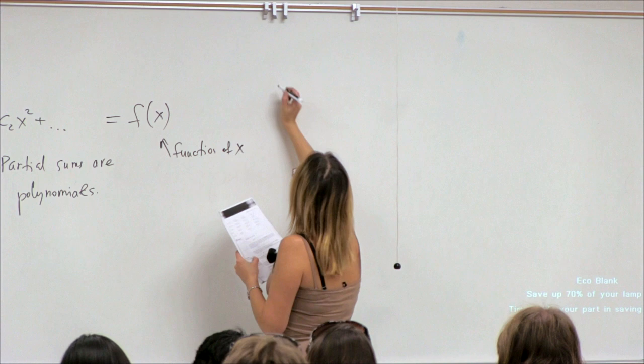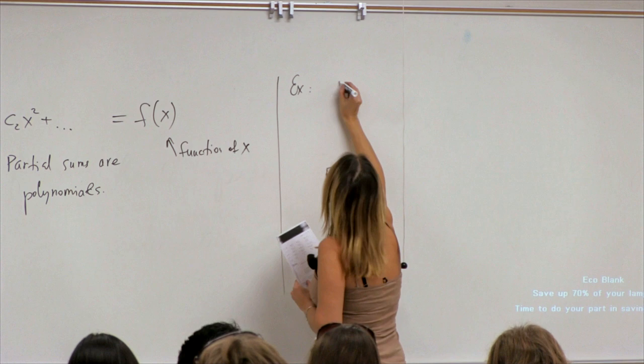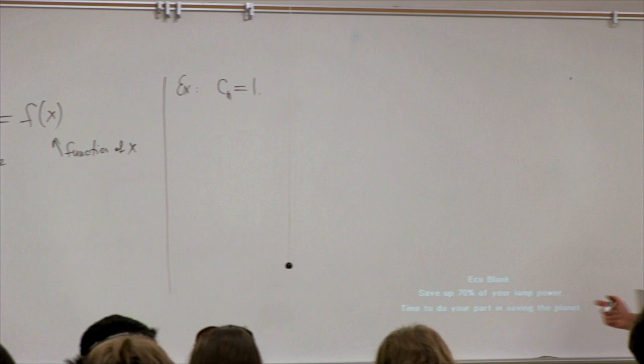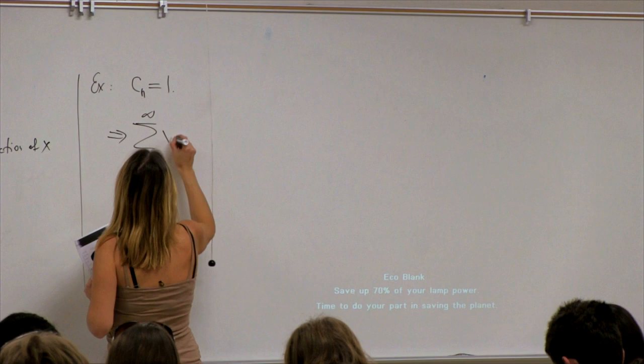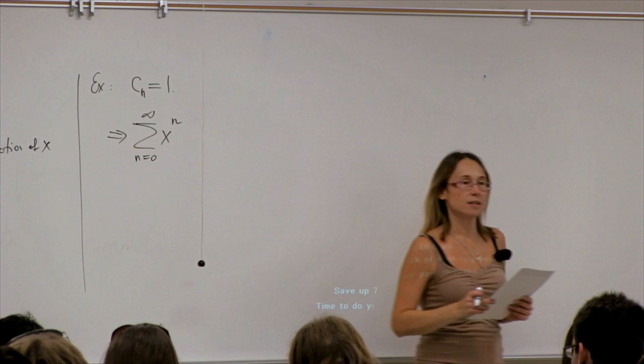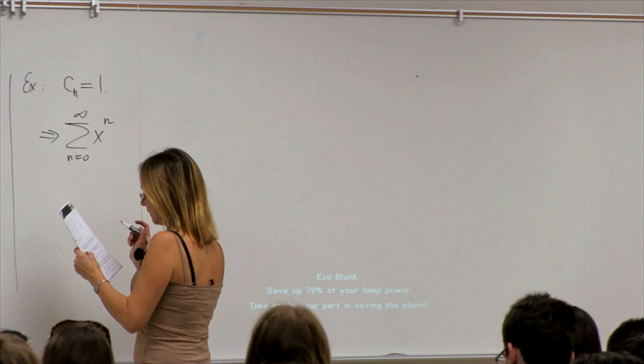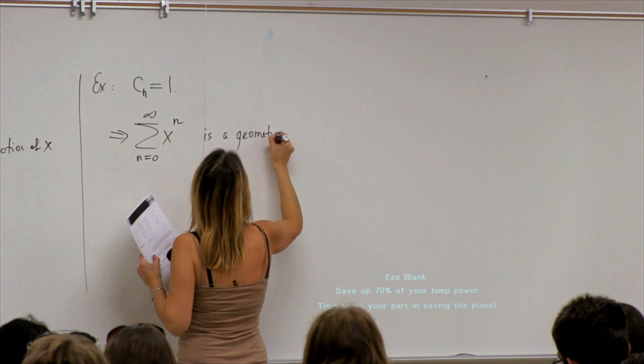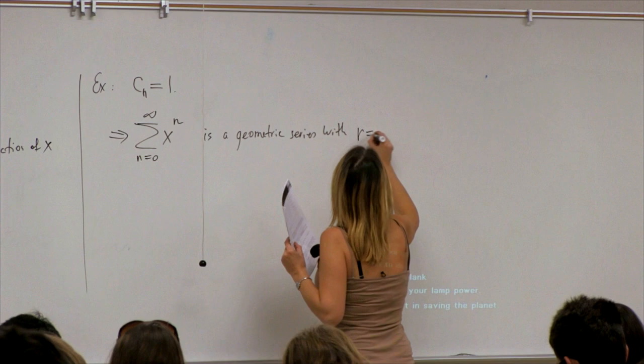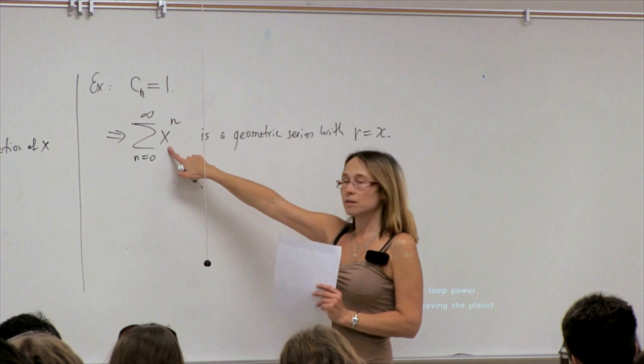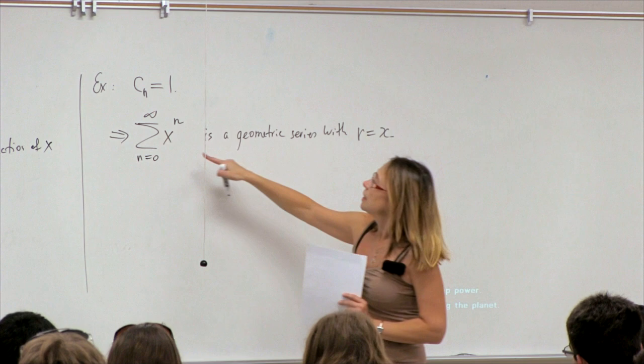The first example: what happens if all cn are the same? If all cn equal 1, we have the series x to the n. This reminds us of the geometric series — it is a geometric series with r given by x. Your regular geometric series has a coefficient a and a number r; this one has a variable x. So for any value of x, this is a geometric series.